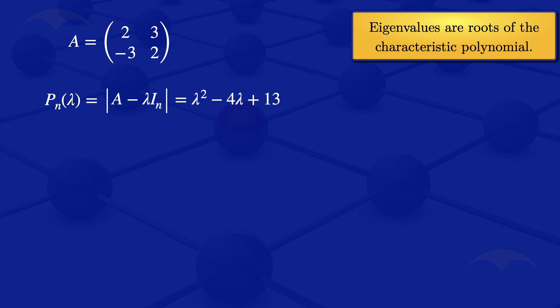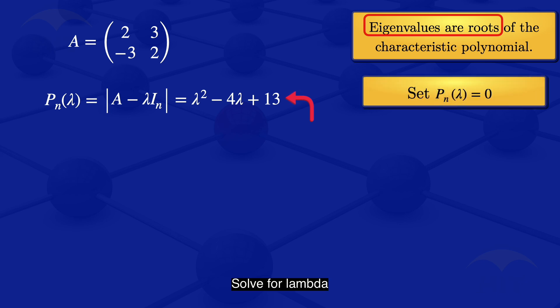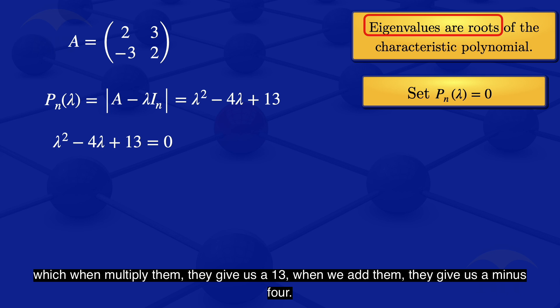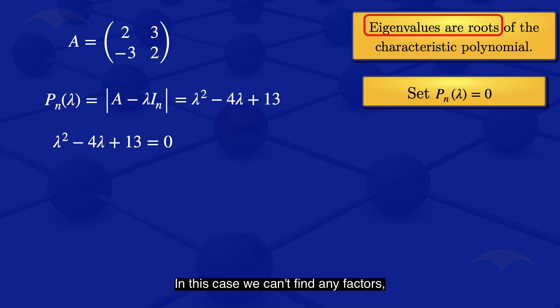Earlier we said that eigenvalues are roots of the characteristic polynomial. To get the roots of that polynomial, we set P_N of lambda equal to 0 and solve for lambda. So we get lambda squared minus 4 lambda plus 13 is equal to 0. We can try to find factors — two numbers which when you multiply them give 13, and when you add them give minus 4. In this case, we can't find any factors, so we have to use the quadratic formula.